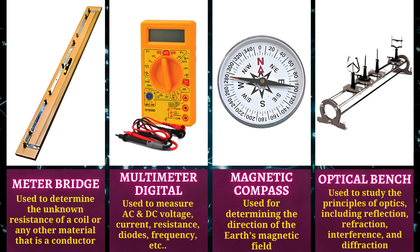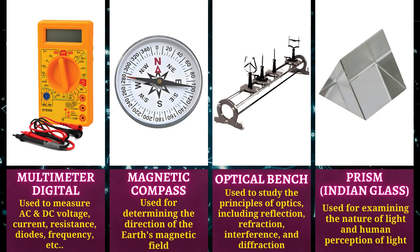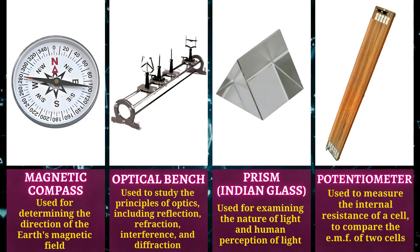Optical bench is used to study the principles of optics including reflection, refraction, interference, and diffraction. Prism is used for examining the nature of light and human perception of light.